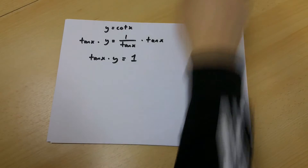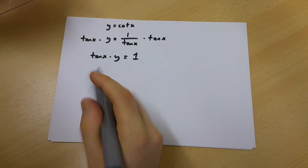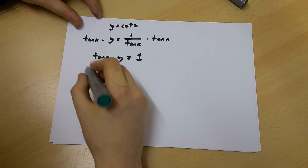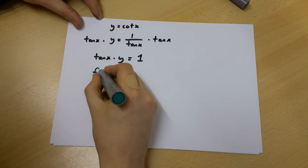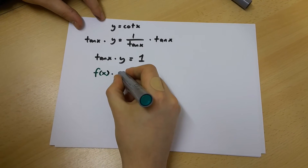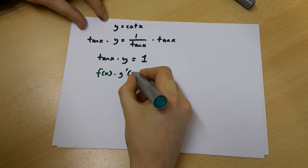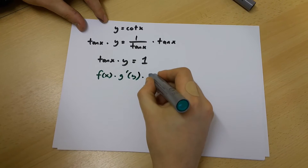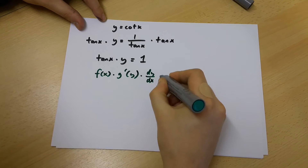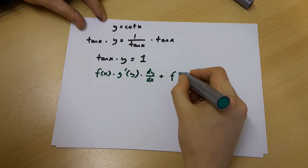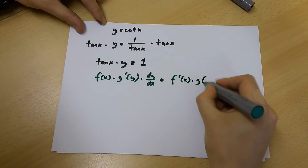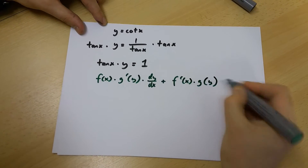Now to get dy over dx we're going to use an implicit differentiation formula. That is the function of x multiplied by the derivative of the function of y multiplied by dy over dx, plus the derivative of the function of x multiplied by the function of y.